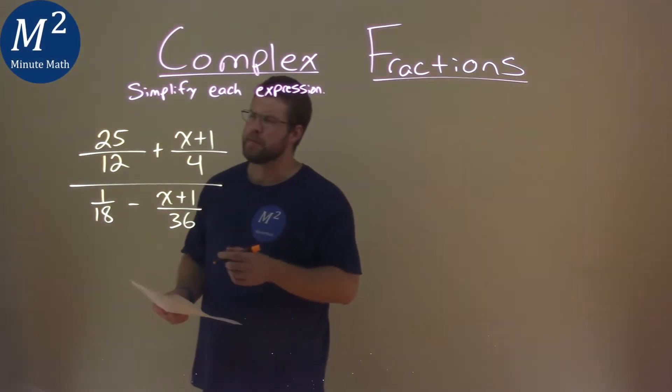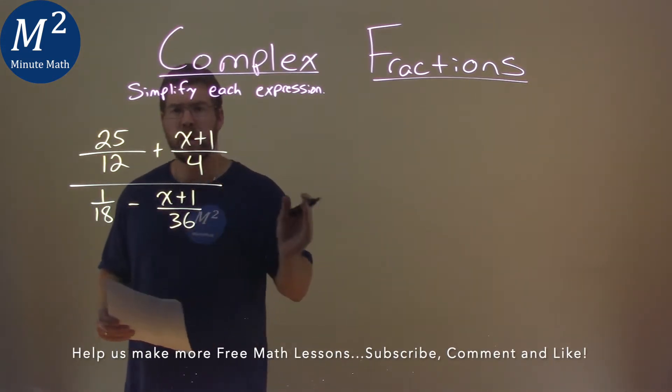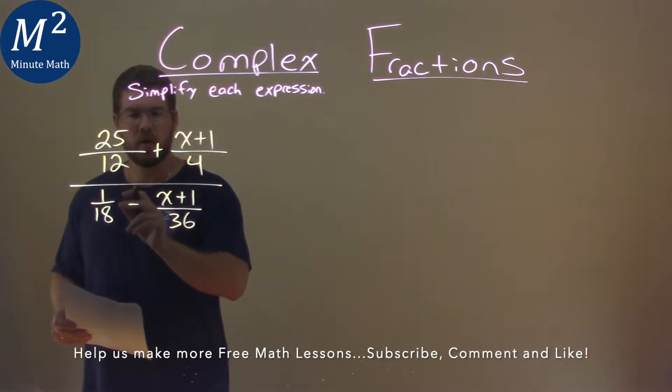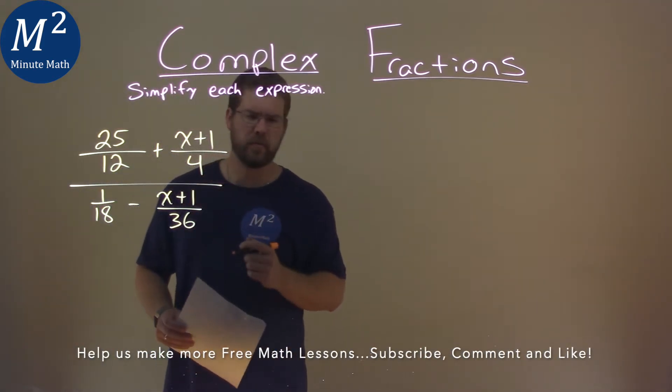We're given this problem right here: 25 over 12 plus x plus 1 over 4, all over 1 over 18 minus x plus 1 over 36. We gotta simplify it.